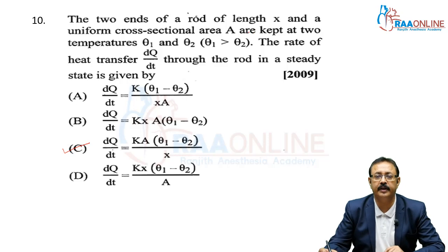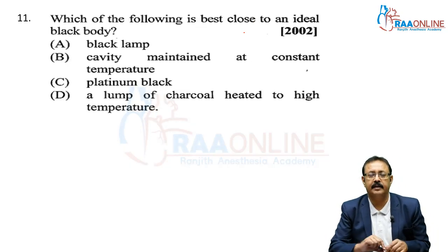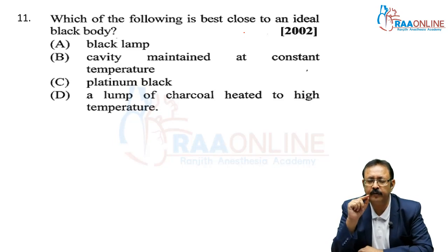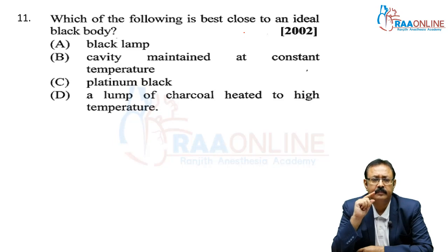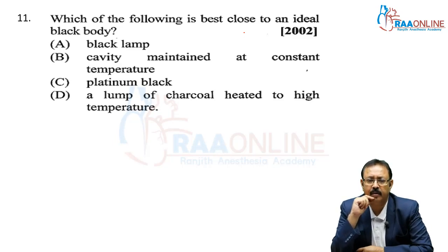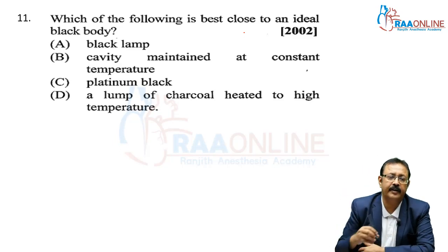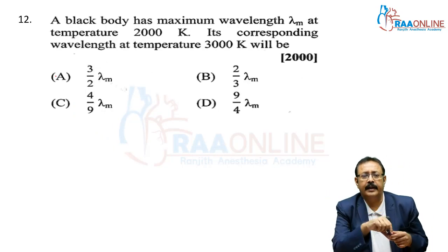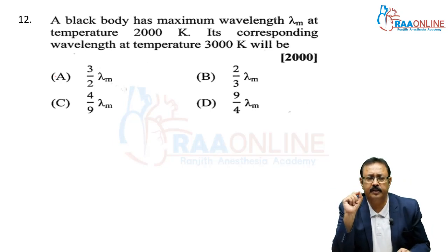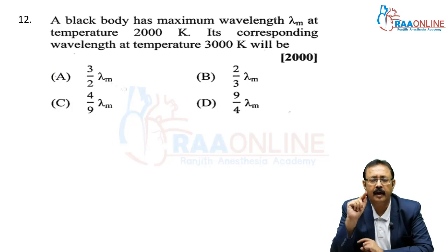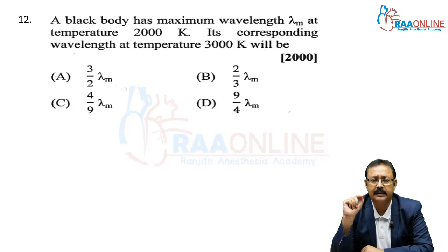From AIPMT 2002: which of the following is closest to an ideal black body? Options are black lamp, cavity maintained at constant temperature, platinum black, or a lump of charcoal at high temperature. We go with C — platinum black. Next, from AIPMT 2000: a black body has maximum wavelength λM at 2000 K. What is its corresponding wavelength at 3000 K?